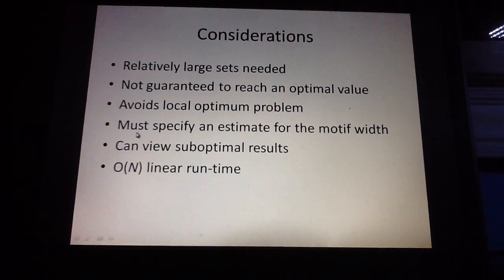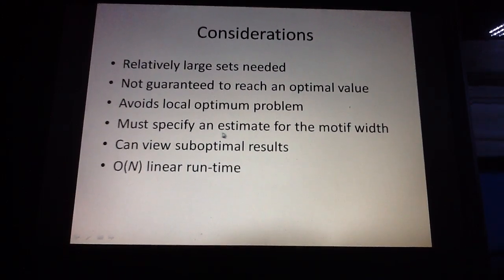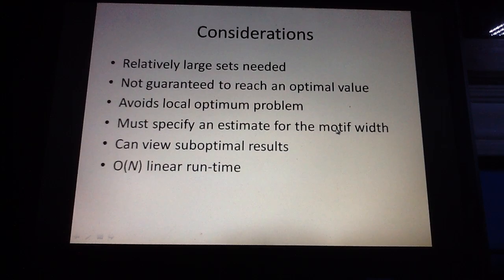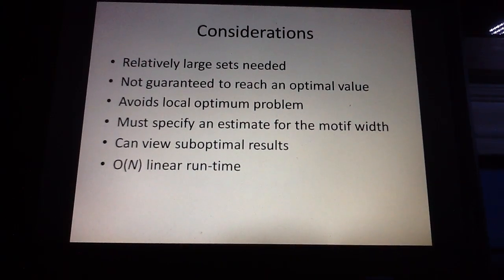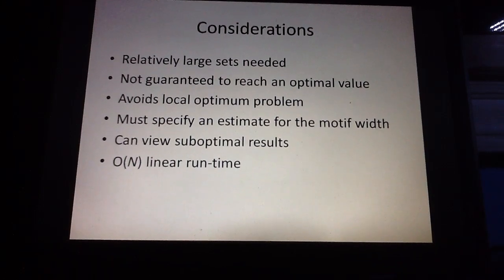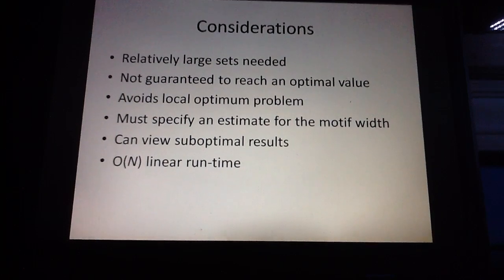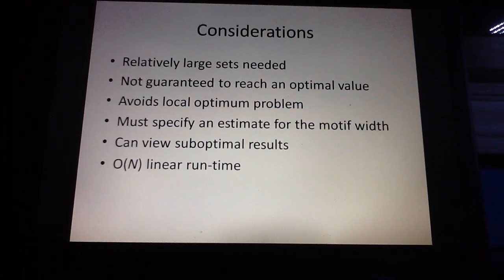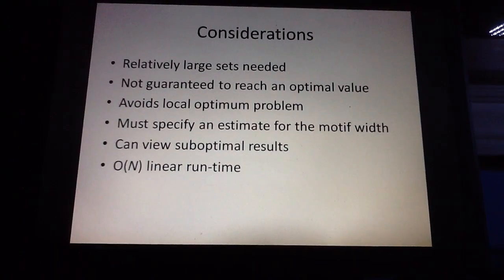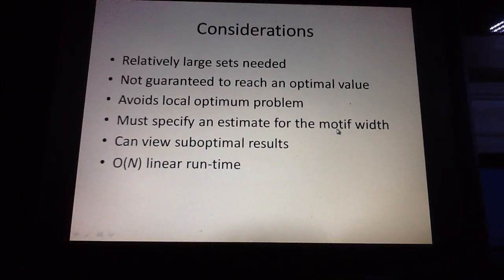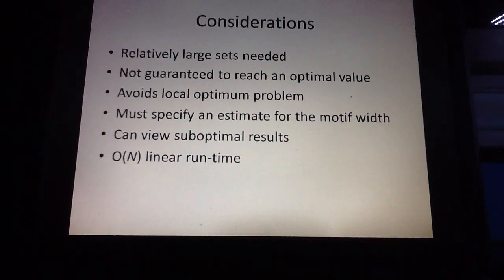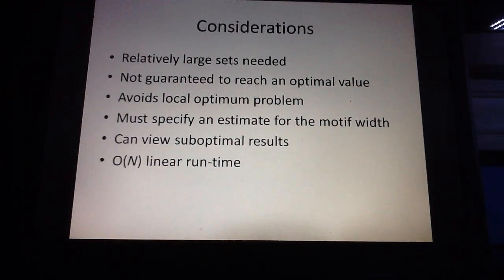Another disadvantage of the Gibbs sampling method is that you have to specify an estimate of the width of your motif. For instance, in this example we gave the algorithm an estimate of 7 residues as the length of the motif. This is one disadvantage of the Gibbs sampling method — you have to provide an estimate of the motif width.